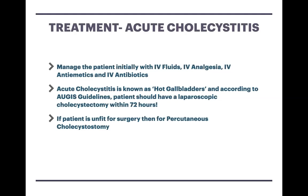The treatment for acute cholecystitis — which involves active inflammation and infection of the gallbladder — begins with IV fluids, IV analgesia, IV antiemetics, and IV antibiotics to clear the infection. Acute cholecystitis is known as a 'hot gallbladder,' and according to the AUGIS guidelines, the patient should be operated on within 72 hours. We admit the patient and perform a laparoscopic cholecystectomy as soon as possible within that timeframe. If the patient is rather old and frail and not fit for surgery, we may consider a percutaneous cholecystostomy — a drain inserted into the gallbladder via interventional radiology.